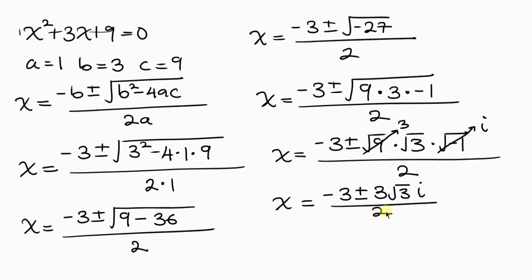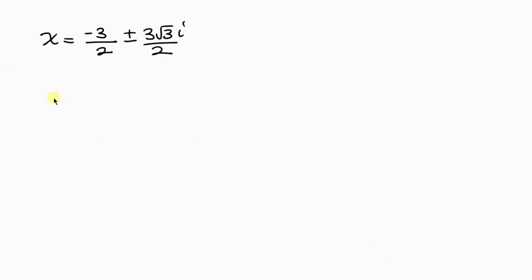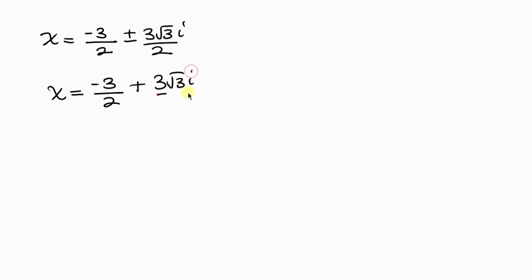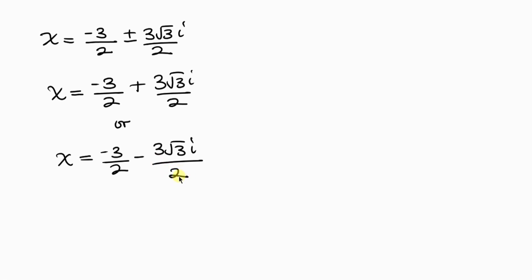We can separate the fraction: negative 3 over 2 plus or minus 3 root 3 i all over 2. So there are two complex values of x: x equals negative 3 over 2 plus 3 root 3 i all over 2, or x equals negative 3 over 2 minus 3 root 3 i all over 2. In all, we have two complex solutions and one real solution for x, which is x equals 3.